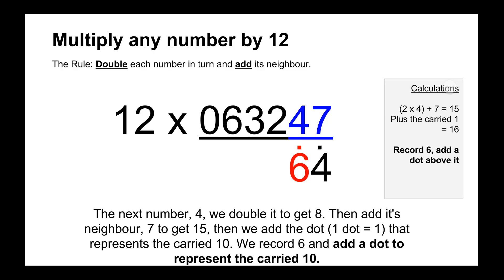And then we go across to the left and we do 4 times 2 is 8 plus its neighbour which is 7 which gives the answer 15, but then we've got to remember to add the dot above the 4 which equals 16. So we record the 6 and then we put a dot above the 6 to represent the carry 10.